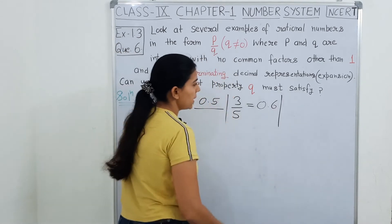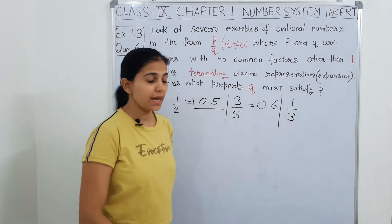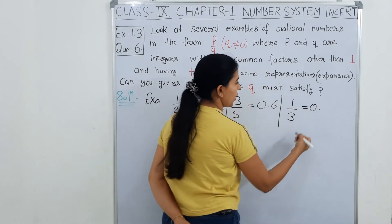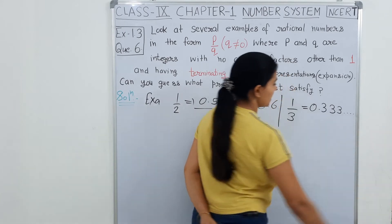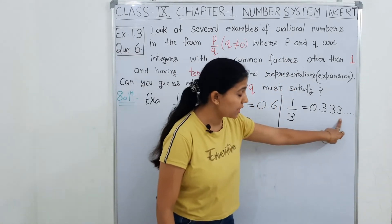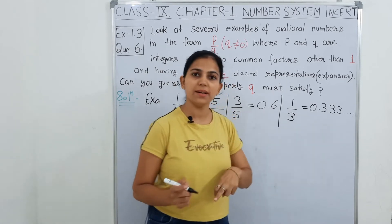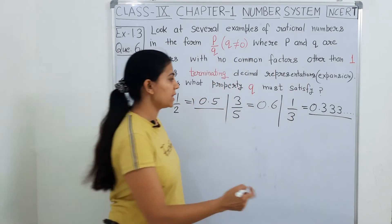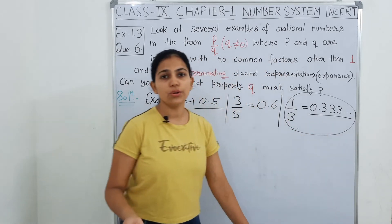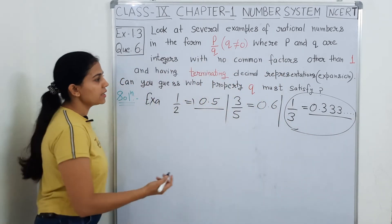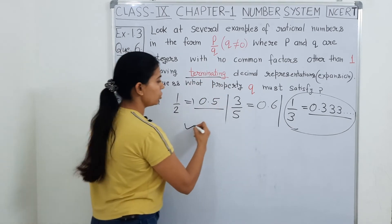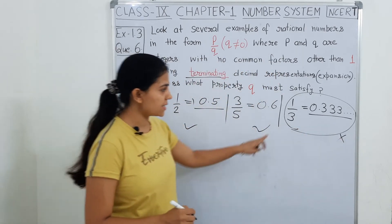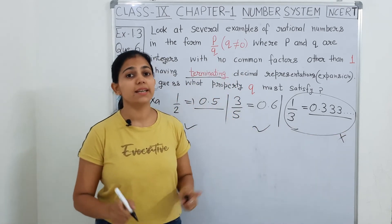अब एक और example ले लो. मानलो हमने ले लिया अभी 1 upon 3. अब इसको solve करो — जब हम 1 upon 3 को solve करेंगे तो क्या आएगा? 0.333... और ये इस तरीके से आजाएगा. तो ये decimal expansion कौन सी आ गई? Terminating तो नहीं है — ये तो non-terminating decimal expansion आ गई, plus ये repeating भी है — non-terminating repeating. मतलब हम ऐसा example नहीं ले सकते, क्योंकि हमें तो बोला है कि expansion जो है वो terminating होनी चाहिए.